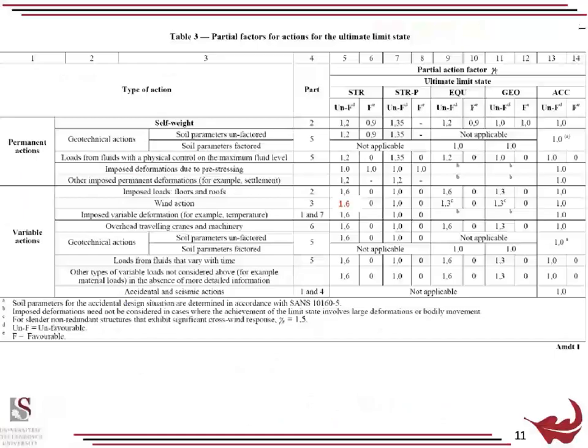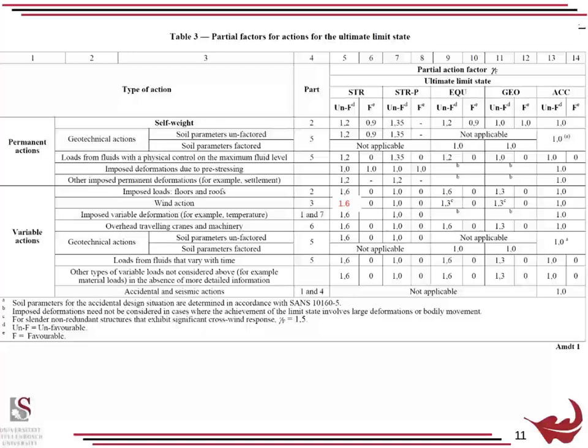When using combination factors, for self weight it's 1.2 (STR) and 1.35 (STRP). Wind is 1.6 — please make sure you're on the newest wind load code. If you've got an older version it might say 1.3; it's 1.6 now. There are lots of debates in industry about that, but at the moment it is 1.6, and there is good reason why. Wind under STRP is 1.0.